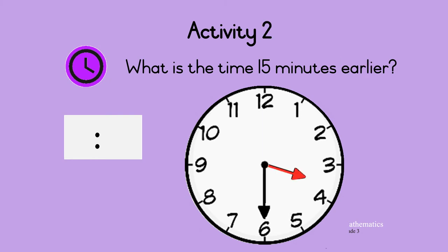Activity two: what is the time 15 minutes earlier? Let's move the hand anti-clockwise by 15 minutes. The minute hand now points to three, which shows 15 minutes. The hour hand is still between three and four but closer to three. So the time is quarter past three. Yes!